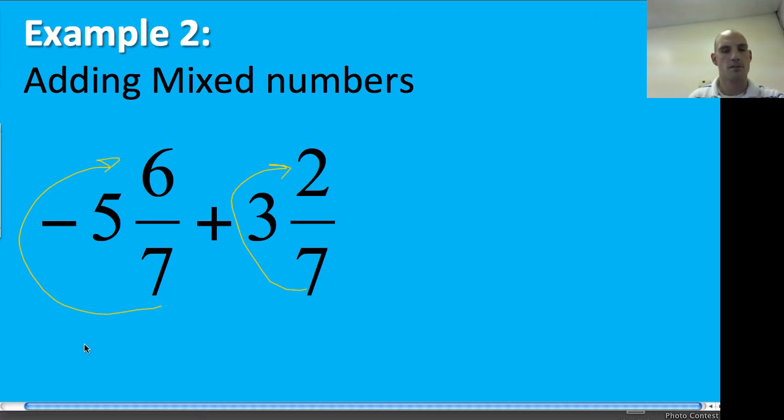So I've got 7 times 5 plus 6 and that gives me equals 41 and I'm still going to be over 7. Okay so I've got 41 over 7 and I know that it's negative so I've got negative 41 over 7 plus and then I'm going to multiply these 7 times 3 plus 2 gives me 21 plus 2 equals 23 still over 7.